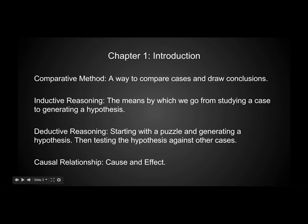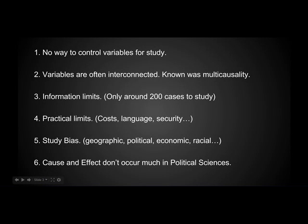Unfortunately, all of these methods are very difficult for a lot of reasons. The first is that there is no way to control variables for study — it's countries, you can't control the variables. It's also impossible to isolate the variables because they're so interlinked with each other. Not only that, but due to policy changes and social upheavals, variables change. The second reason is that many of these variables are interconnected — the changing of one can totally remove or drastically modify another. Normally, multiple variables are at work for a single policy or event, and there is rarely an easy cause-and-effect relationship, though it does happen.